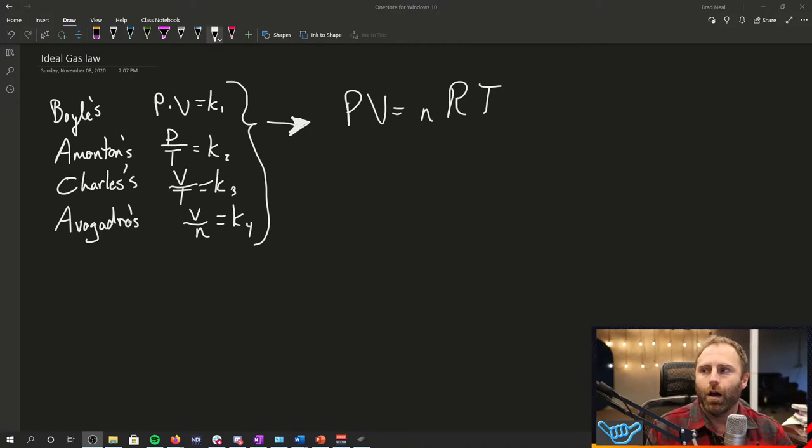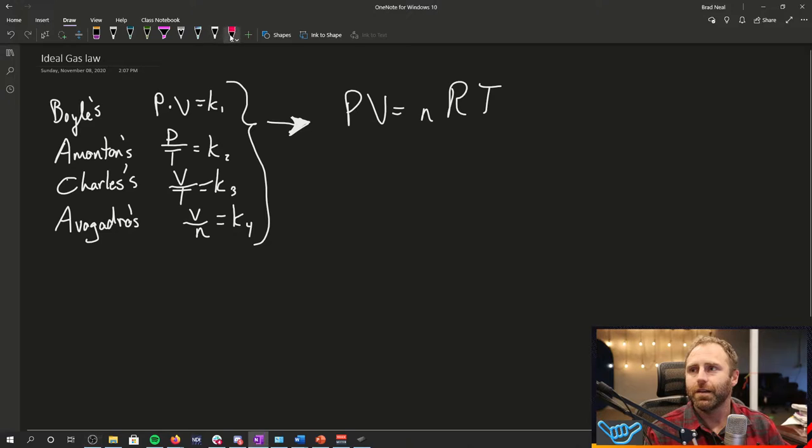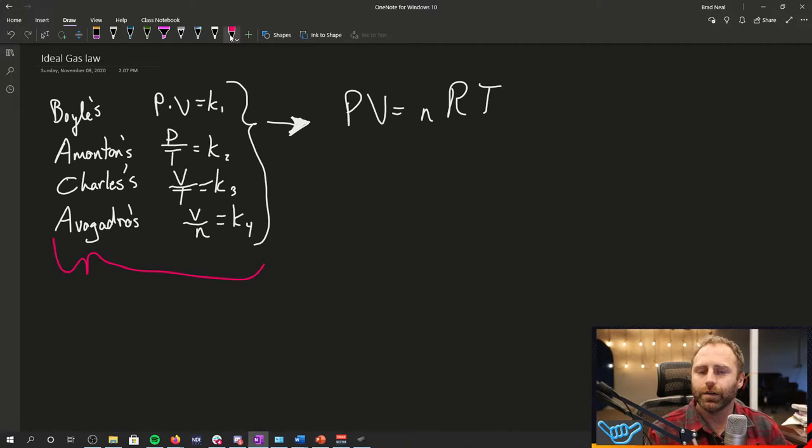Boyle's Law, Amontons's Law, Charles's Law, Avogadro's Law, written out in their actual equation form. So everything that you're seeing here on the left, these are the equations with their individual constants.